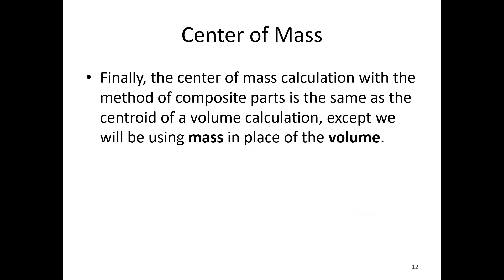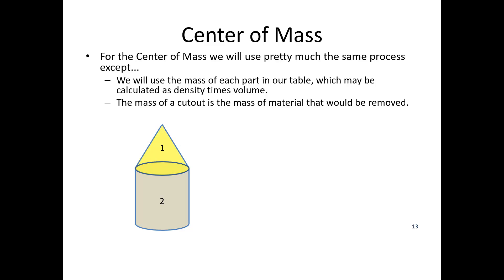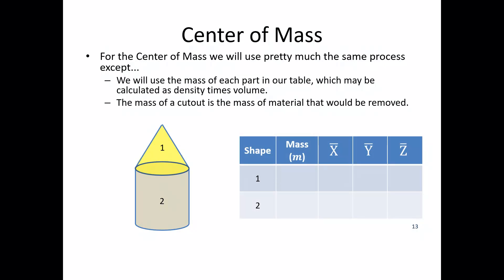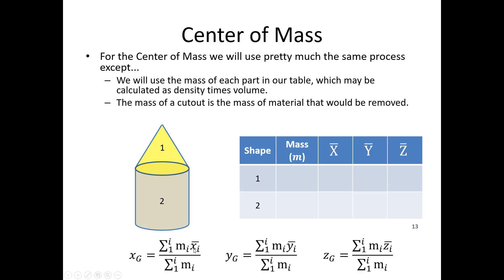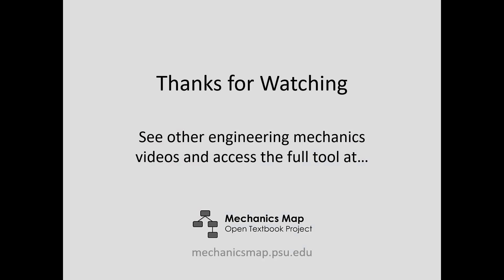Finally, the center of mass calculation for composite parts is the same as the volume calculation, except we use mass in place of volume. Say we've got a brass cone on top of an aluminum cylinder with two different materials — we create our table using mass instead of volume. The calculation becomes mass one times x bar one plus mass two times x bar two over the total mass. That covers centroids in 2D, centroids in 3D, and center of mass via composite parts.